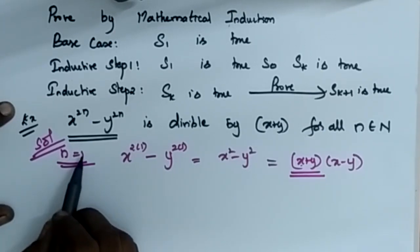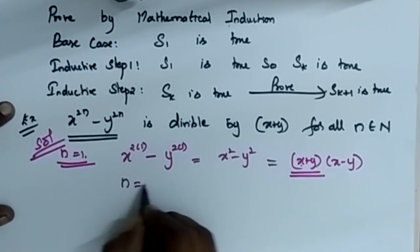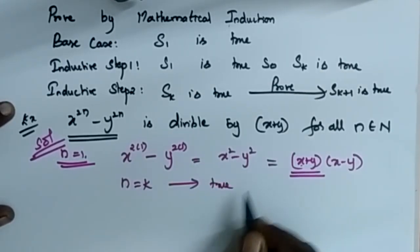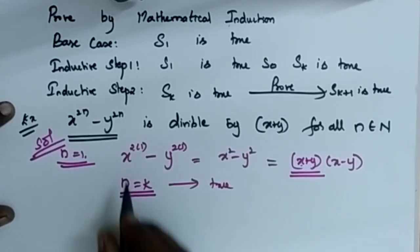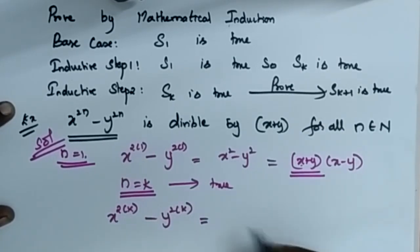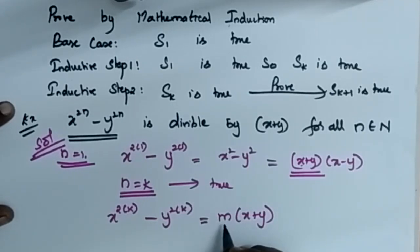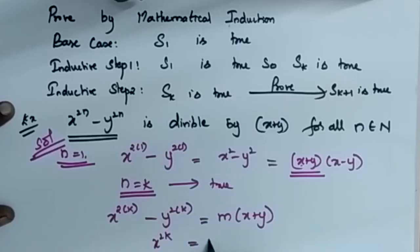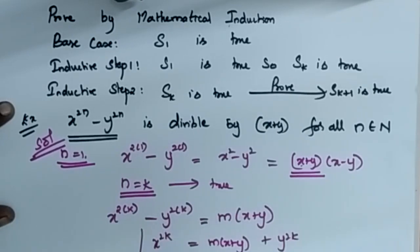Since it is true for N equal to 1, we say that it is true for N equal to K. So when N is equal to K, my expression becomes X power 2K minus Y power 2K, which is equal to some multiple M of X plus Y. I am going to rewrite this equation as X power 2K equals M into X plus Y plus Y power 2K. This I am going to use in the further proof.